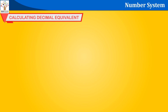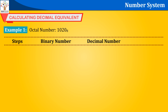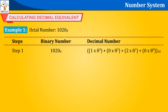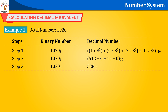Calculating decimal equivalent. Example 1: Octal number 1020 base 8. Step 1: 1×8³ + 0×8² + 2×8¹ + 0×8⁰. Step 2: 512 + 0 + 16 + 0. Step 3: 1020 base 8 equals 528 base 10. Note: 1020 base 8 is normally written as 1020.